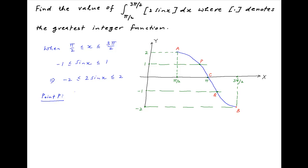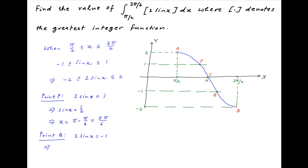Point p is when 2 sin x is equal to 1, or sin x is equal to 1/2, and this condition is satisfied in the interval π/2 to 3π/2 when x is equal to π minus π/6, or 5π/6. Similarly, point q is when 2 sin x is equal to minus 1, or sin x is equal to minus 1/2, and this condition is satisfied in the interval when x is equal to π plus π/6, which is equal to 7π/6.